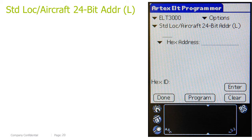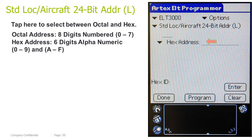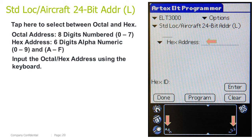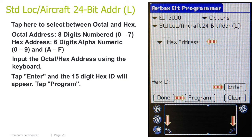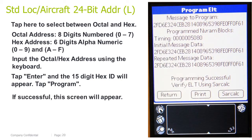Standard location aircraft 24-bit address log: tap here to select between octal and hex. Octal address is 8 digits, numbered 0 through 7; hex address is 6 digits, alphanumeric, 0 through 9 and A through F. Input the octal/hex address using the keyboard. Tap Enter and the 15-digit hex ID will appear. Tap Program. If successful, this screen will appear.